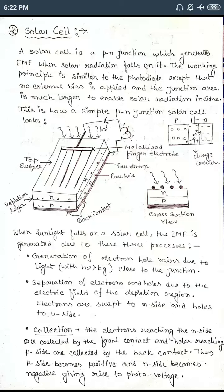A solar cell is a P-N junction diode. It consists of one P-type semiconductor and one N-type semiconductor. Those two semiconductors are diffused together and this forms one junction. So, a solar cell is a P-N junction diode which generates electromotive force when solar radiation falls on it.